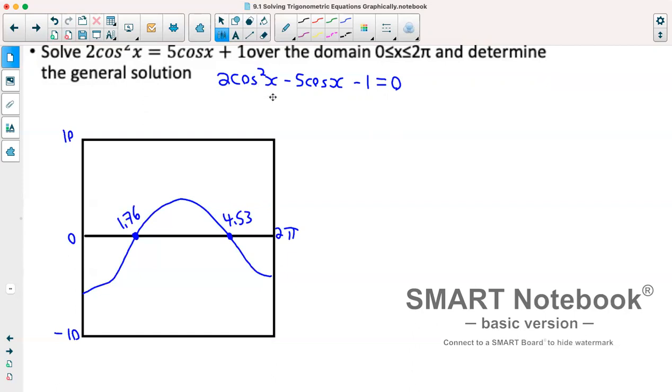Now because cosine has a period of 2π and we have not changed our graph by compressing it horizontally, we know that this will have a period of 2π, so these solutions will repeat every 2π. So our general solution would be x = 1.76 + 2πk where k is an integer, as well as x = 4.53 + 2πk where once again k is an integer.